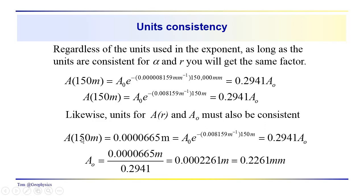If A is going to be in meters, A0 will have to be in meters. We go through this same conversion. We calculate A0 by dividing A by 0.2941, the same constant. And we find that this is 0.0002261 meters, which is 0.2261 millimeters. So everything works out.